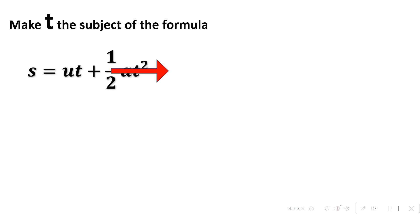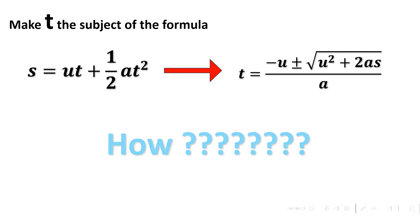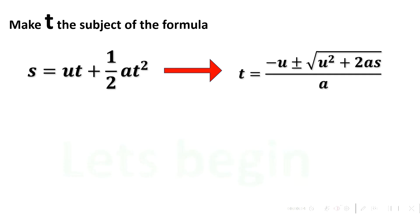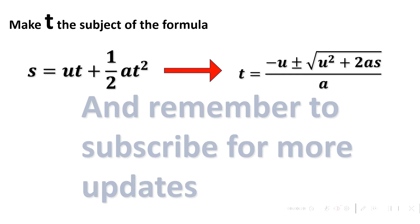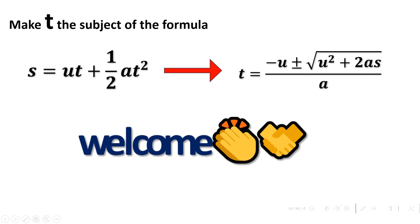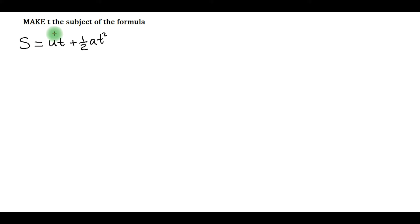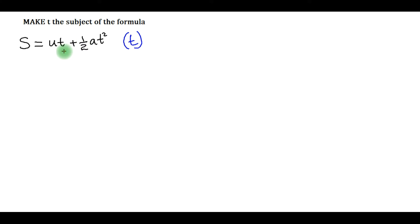Welcome to the subject of the formula s = ut + ½at². We are required to make t the subject of the formula. If you look at this equation, it is normally referred to as the equation of linear motion.